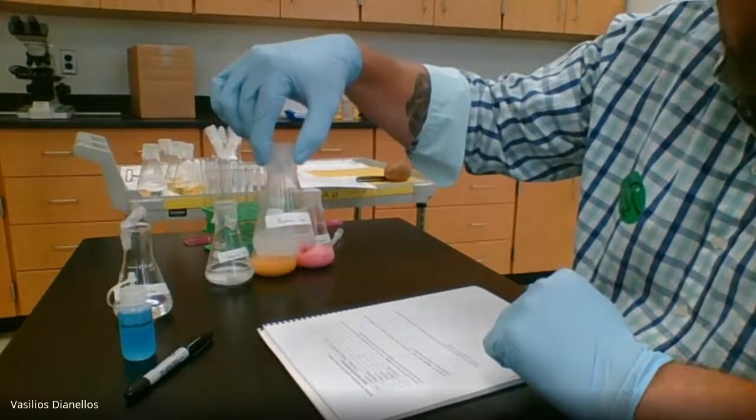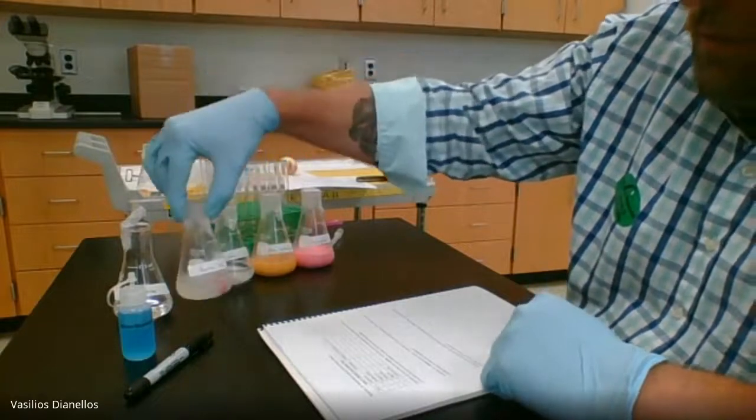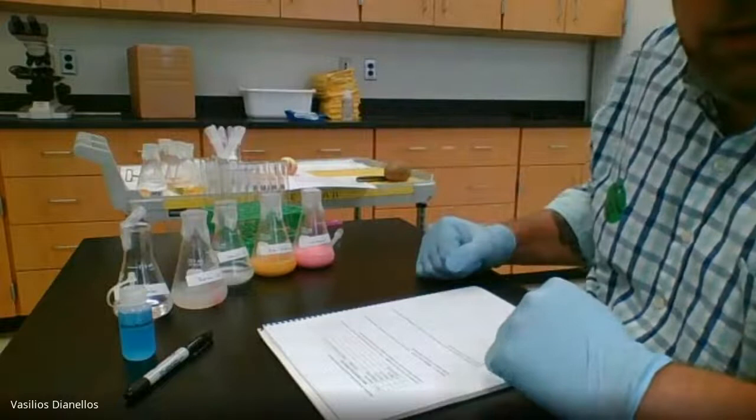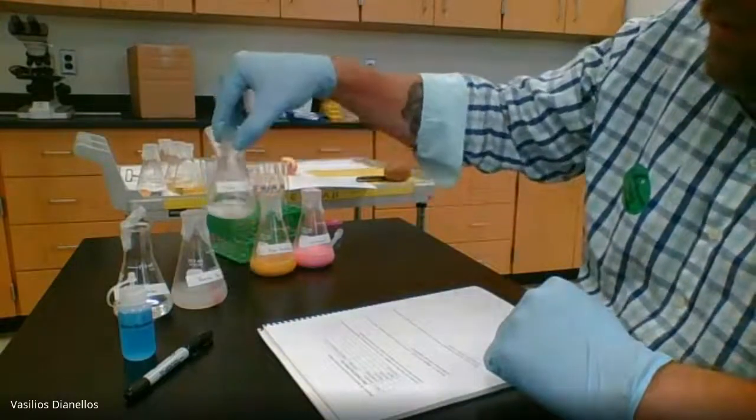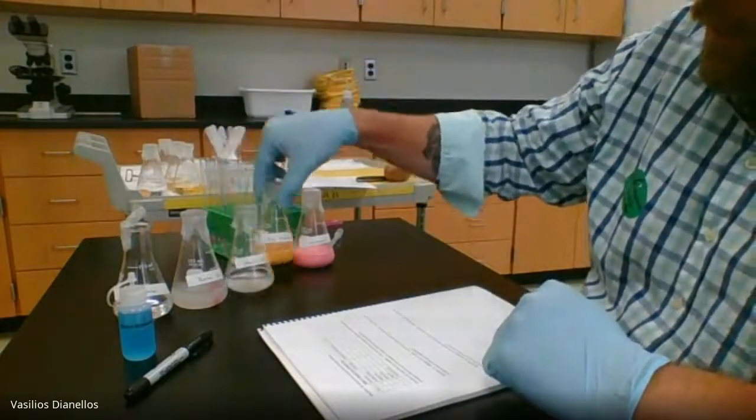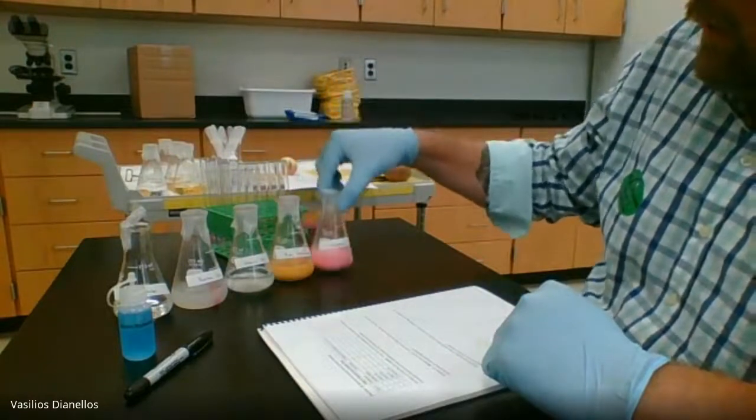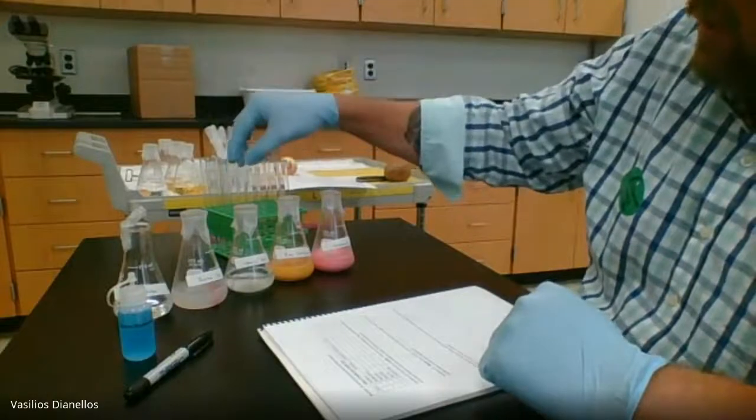The three substances we are testing for protein are the starch solution, the egg solution, and the unknown. I will be putting each of these solutions into a test tube marked at two centimeters.